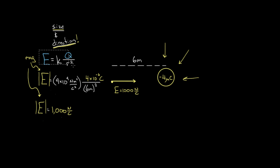To recap: the formula for the electric field created by a charge Q says that the magnitude of the electric field equals K, the electric constant, times the charge creating that field, divided by the distance from the center of that charge to the point where you want to find the field, squared.